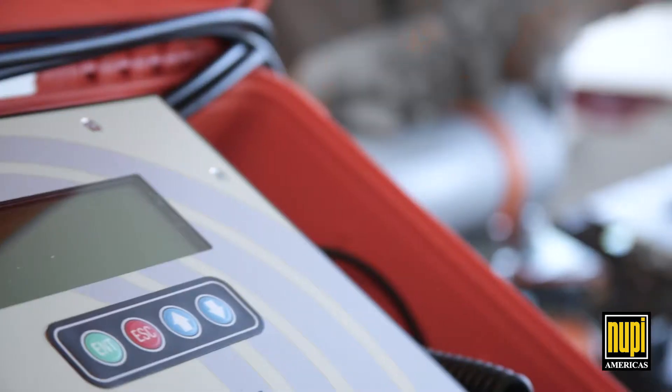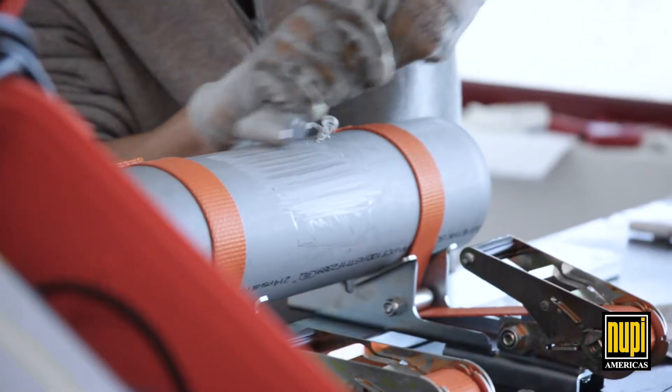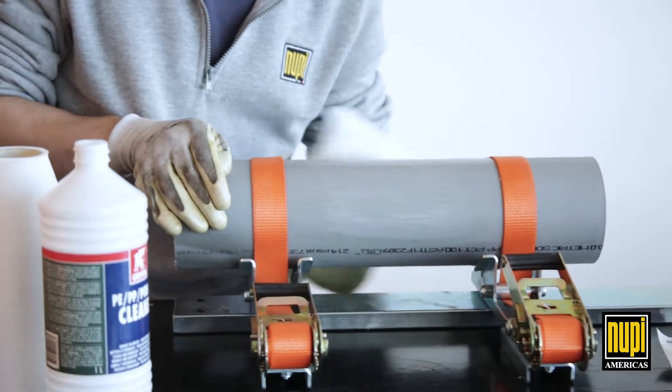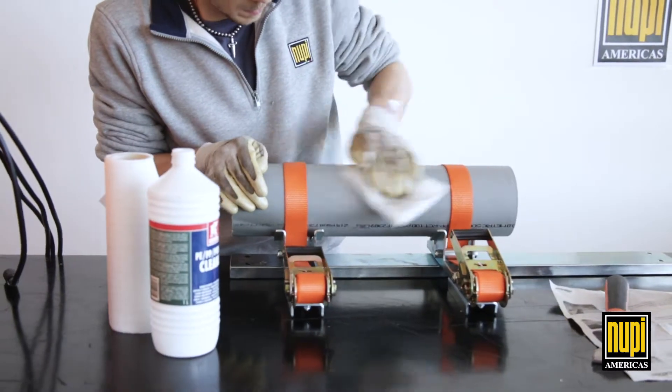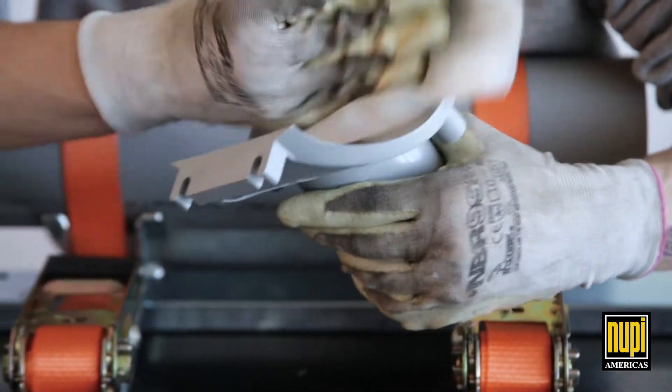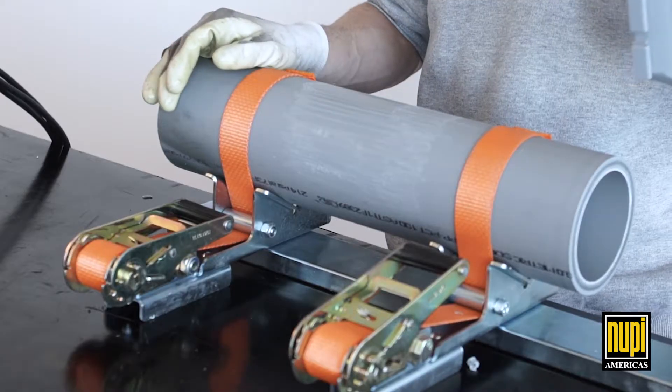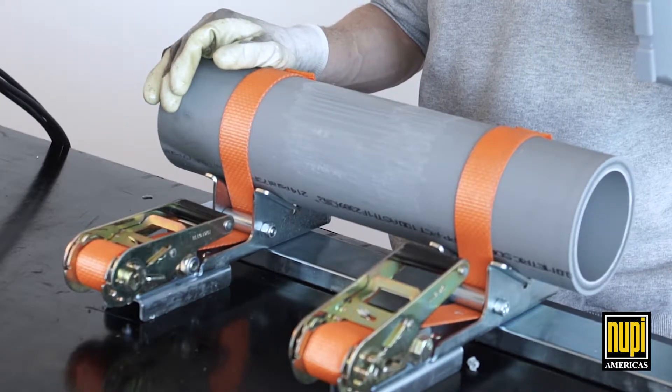Scrape the pipe surface carefully using a manual scraper. After scraping, remove dirt and grease from the welding area of the pipe and inside the saddle using isopropyl alcohol. Wait until the clean parts are completely dry.